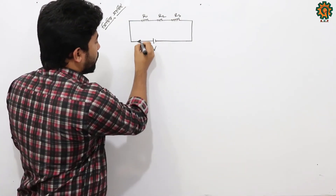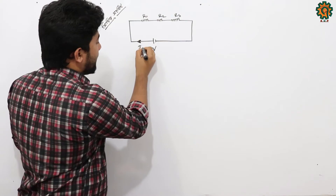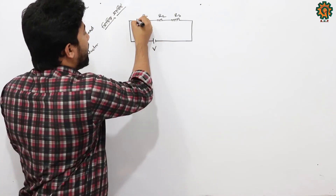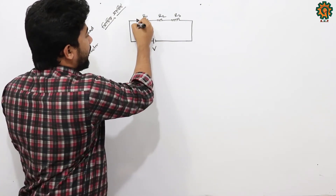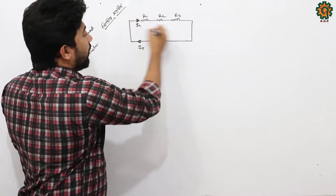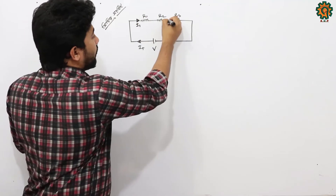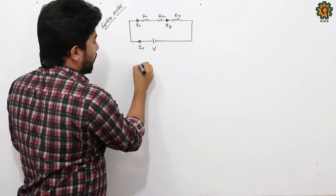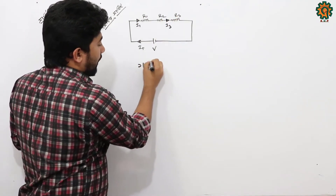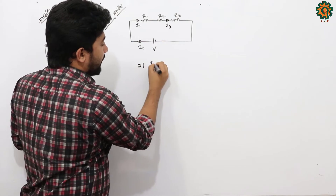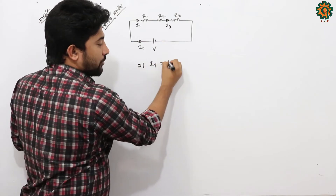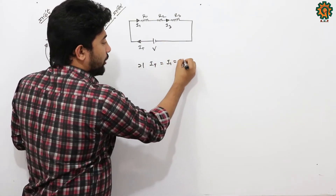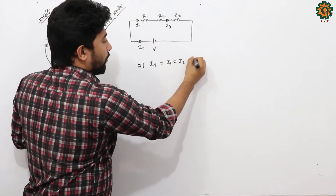We will add a point — if you type it, you will add a point to the current. We will add a point, and this is a point to the current i3. So the total current equals i1 plus i2 plus i3.